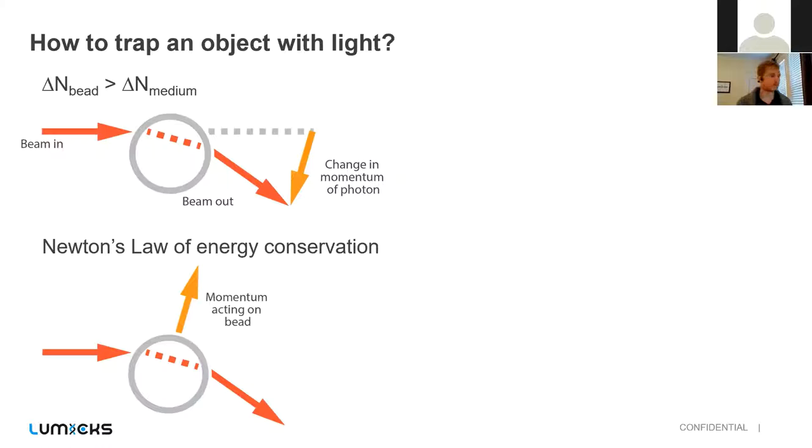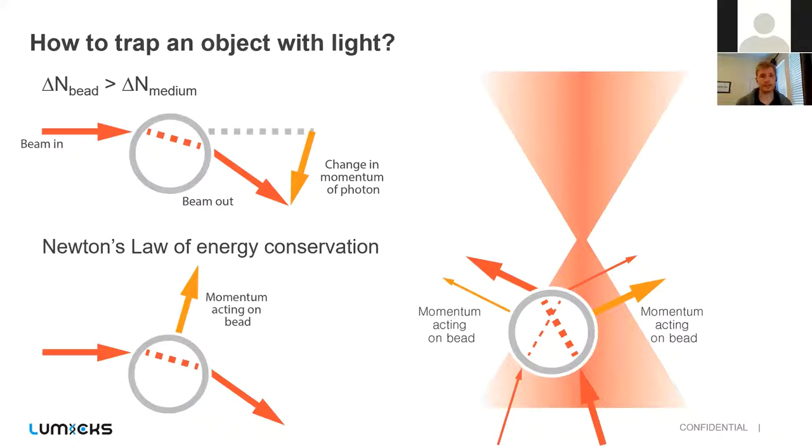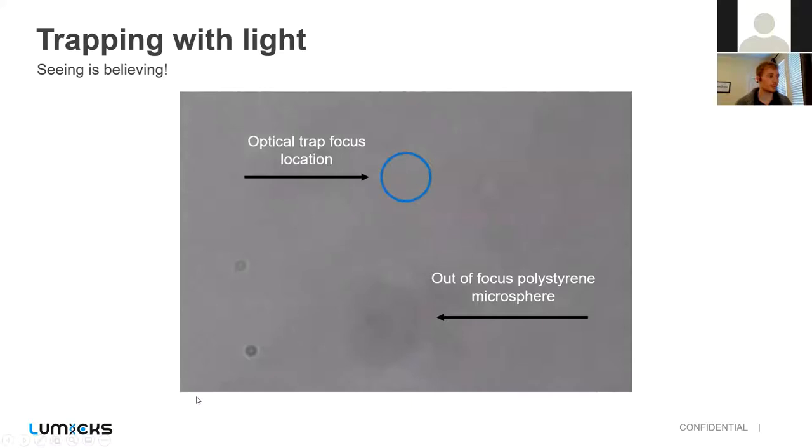And what does this look like when you have a concentrated light source, such as on an objective? Well, that results in a net—so you have a range of photons hitting the bead. This results in a net momentum that pulls it close to the focal point of that concentrated light source. So if you don't believe me, seeing is believing. So in this video, what you just saw is that an out of focus polystyrene microsphere gets pulled into the equilibrium position of an optical trap.